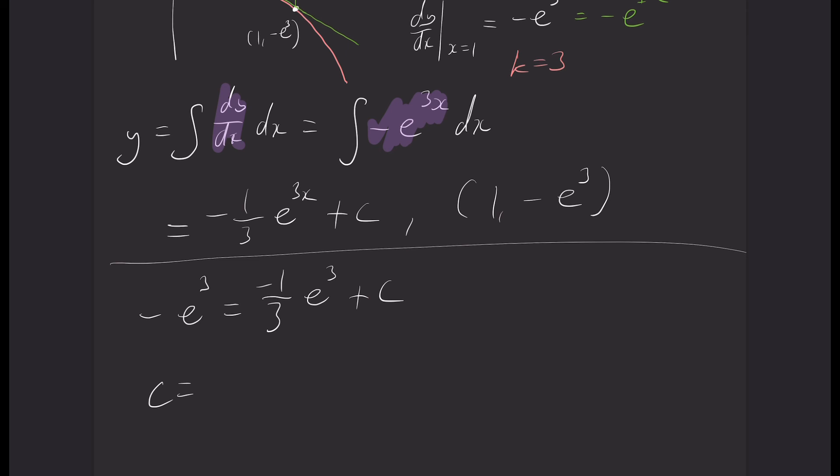Which means that c is equal to 1/3 e³ minus e³. So I've taken c and I've swapped sides. And I've moved this negative over to the other side of the equality. So this is equal to -2/3 e³.